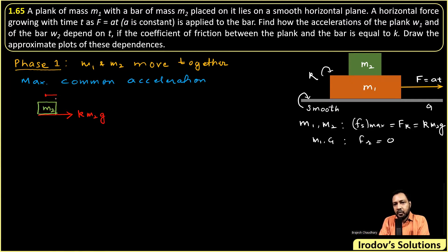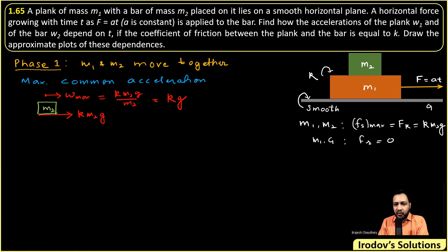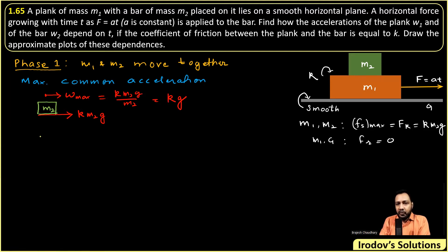The maximum friction force that can act on m2 is km2g. So the maximum common acceleration w_max equals the net force divided by mass: km2g divided by m2, which gives k·g. Now we want to calculate the maximum value of F for which m1 and m2 are still moving together.